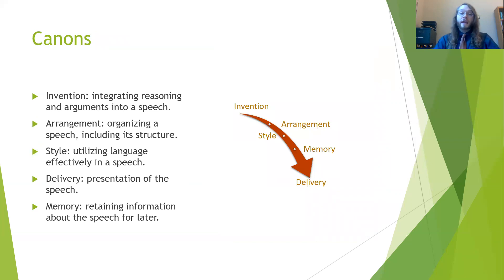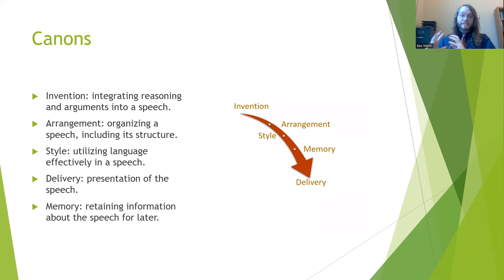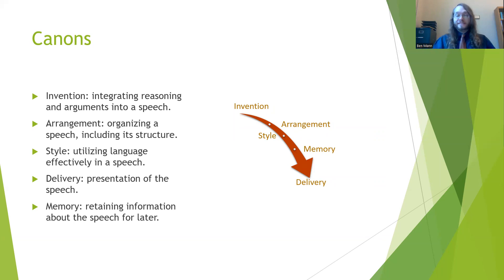There are also what are known as the argumentative canons — five parts that help make for an effective speech. Invention is developing the core reasoning and arguments of the speech. Arrangement is how you take those pieces and structure them — for example, putting your strongest argument first. Style is how you use language, such as a memorable slogan like 'lather, rinse, repeat' to discuss washing hands. Delivery is how you present the speech using nonverbal communication, gesturing, facial expressions, posture, and verbal emphasis.